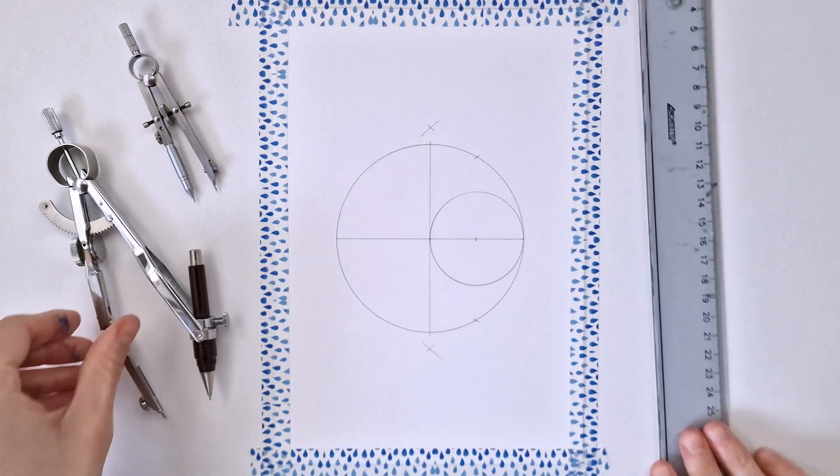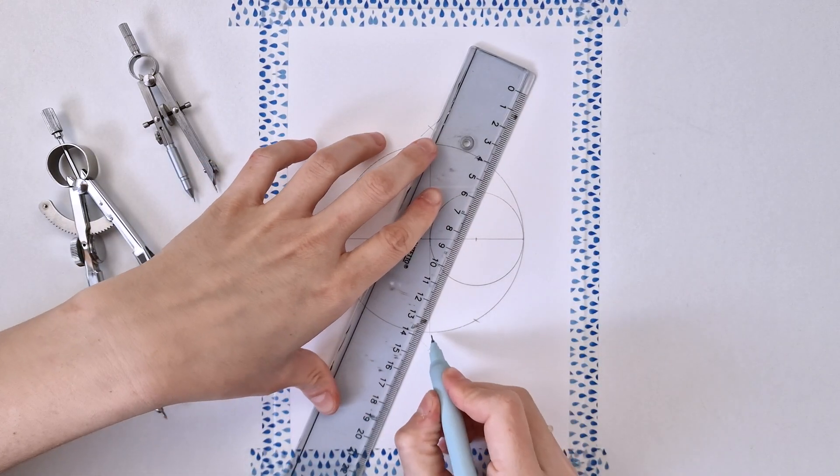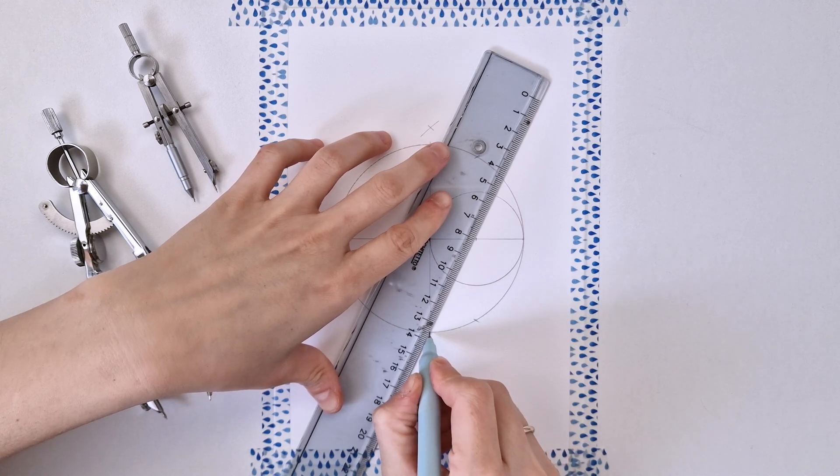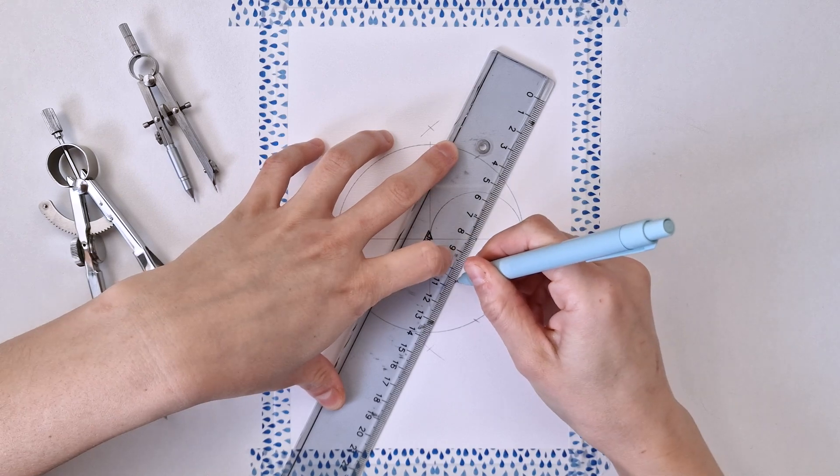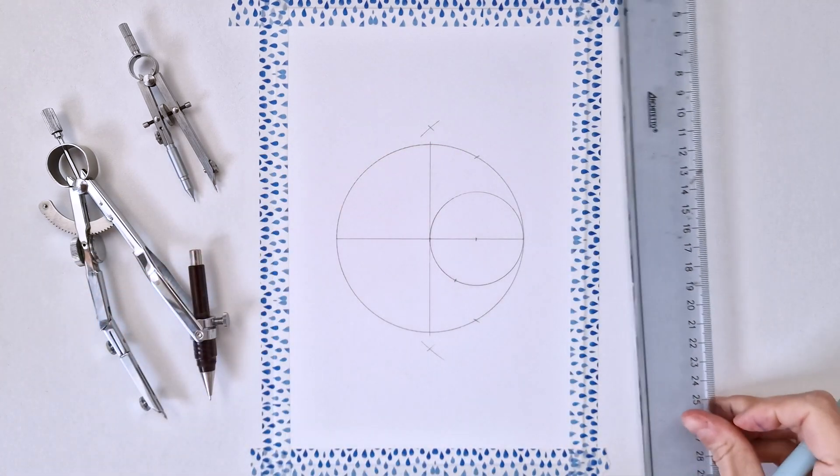Next, I'm aligning my ruler to this point and this one and I'm just making a mark on the smaller circle.